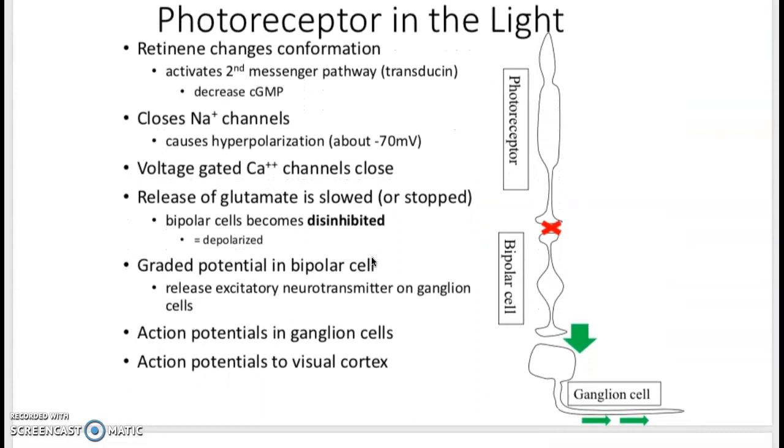In the light, the conformation changes in the retinol. Sodium channels close, which causes hyperpolarization, which causes the calcium channels to close, and then that neurotransmitter glutamate does not get released. When it is not released, the bipolar cell is no longer being inhibited, so it releases an excitatory neurotransmitter that signals the ganglion cell to continue signaling to the brain.